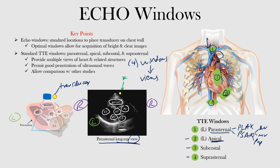The standard echo windows — parasternal, apical, subcostal, and suprasternal — provide multiple views of the heart and related structures. They permit good penetration of the ultrasound waves, which is the main reason we use standard windows. If you place the transducer directly over a rib or bone rather than within an intercostal space, the ultrasound waves will reflect right back off the bone, giving poor penetration and poor images.